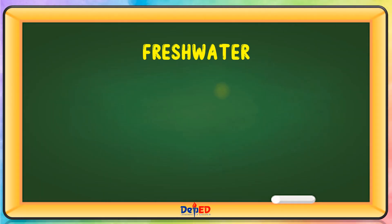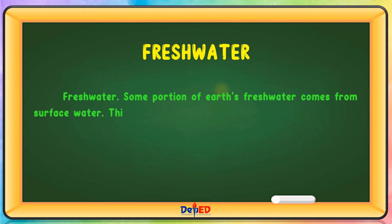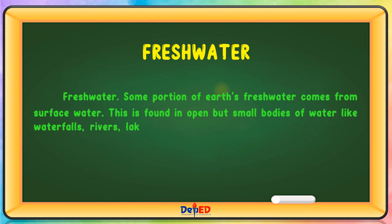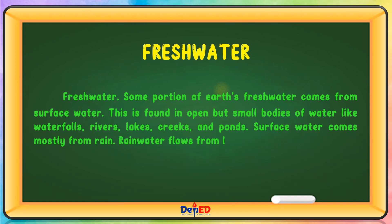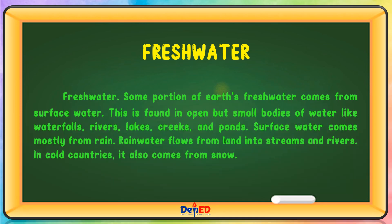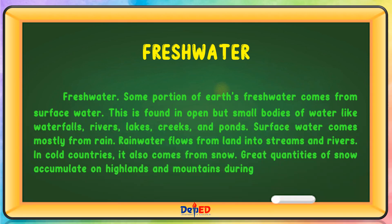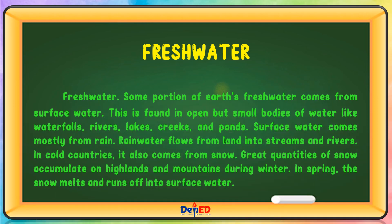Fresh water. Some portion of Earth's fresh water comes from surface water. This is found in open but small bodies of water like waterfalls, rivers, lakes, creeks, and ponds. Surface water comes mostly from rain. Rainwater flows from land into streams and rivers. In cold countries, it also comes from snow. Great quantities of snow accumulate on highlands and mountains during winter. In spring, the snow melts and runs off into surface water.